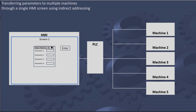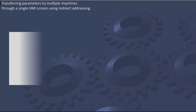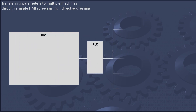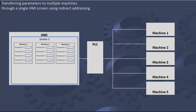The solution is having a single parameter list accessible through the HMI screen. With this approach, you can enter a machine number, and with a simple click, the parameters will be transferred to the respective machines. You will also be able to view the current parameters for any machine, facilitating quick adjustments as needed.